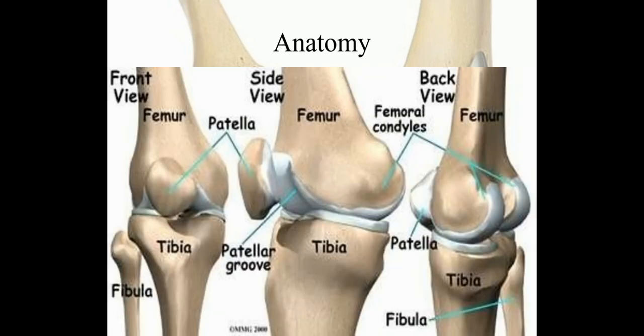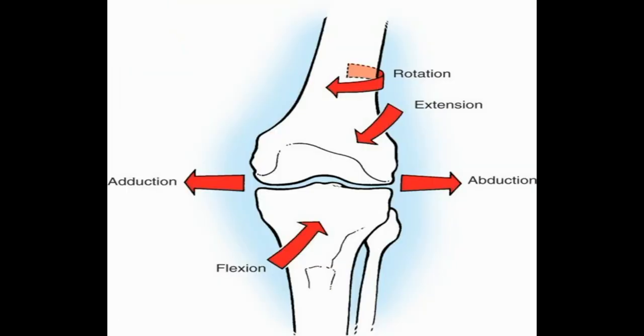This is the normal anatomy of the knee joint as we can see in the front view, side view, and the back view. In the front view we can see the patella, the femur, and the tibia and fibula. The side view also shows all three bones, and the posterior view is on the right-hand side of the picture. The primary movements at the knee joint are flexion and extension, with rotation and some abduction and adduction also present.